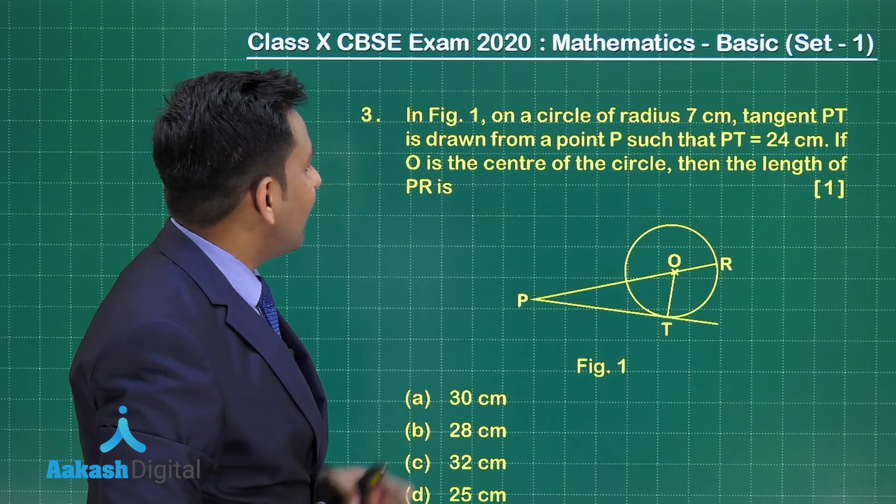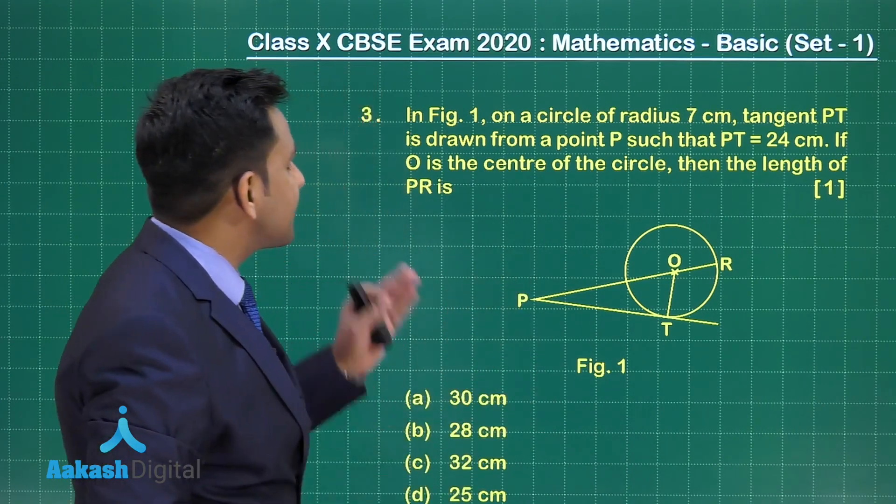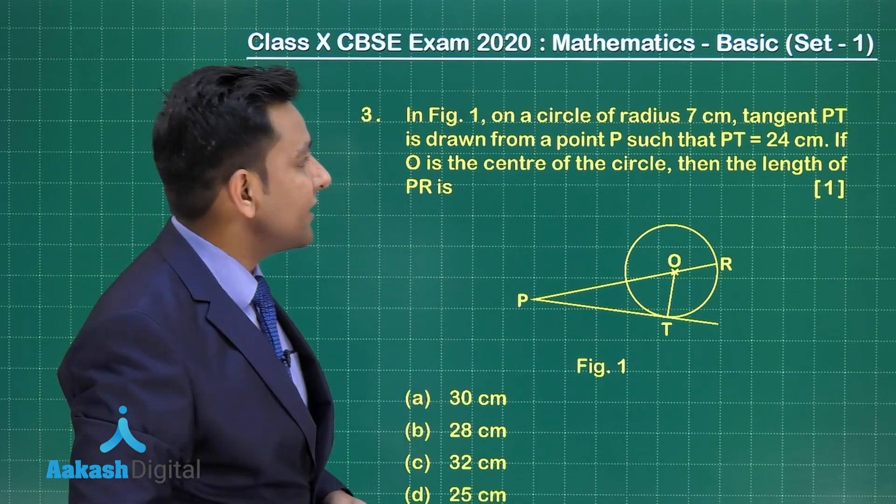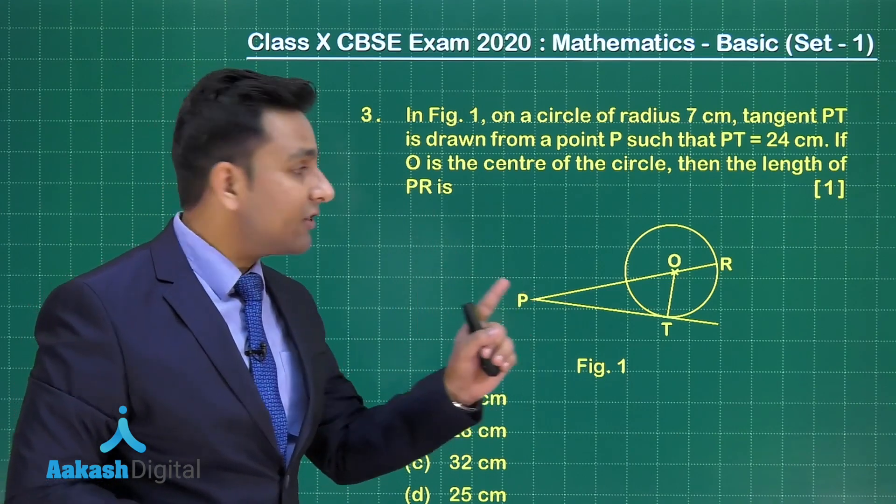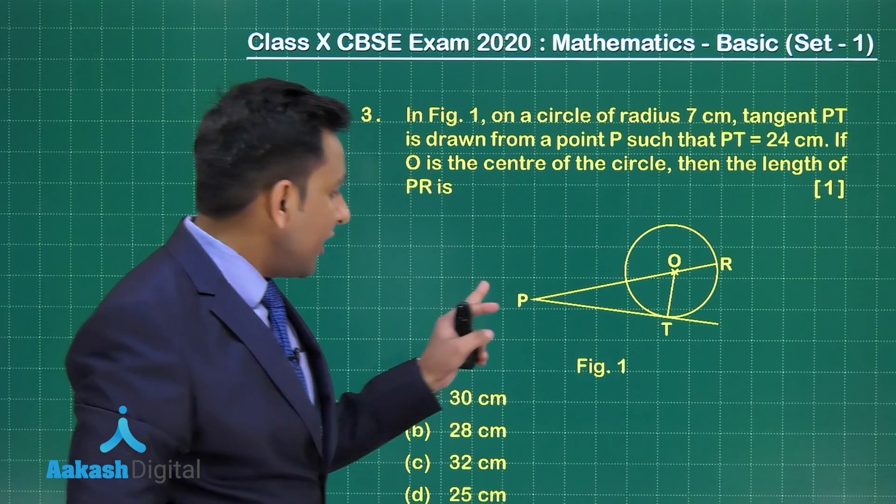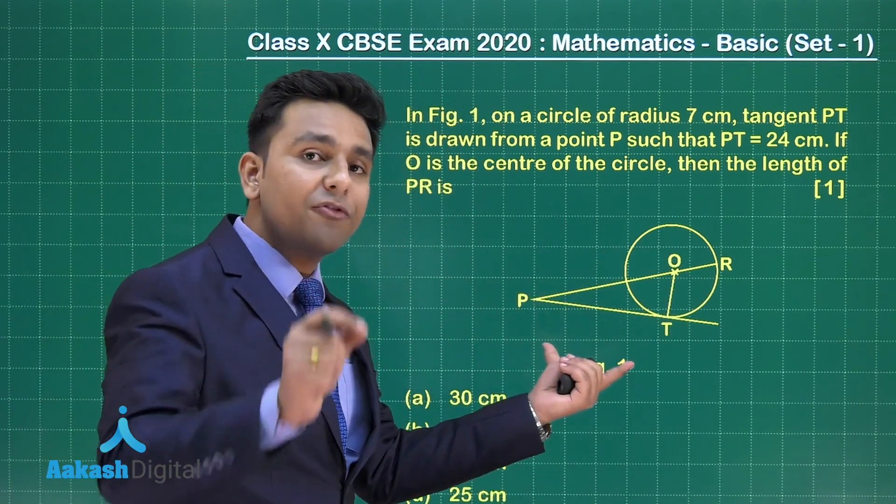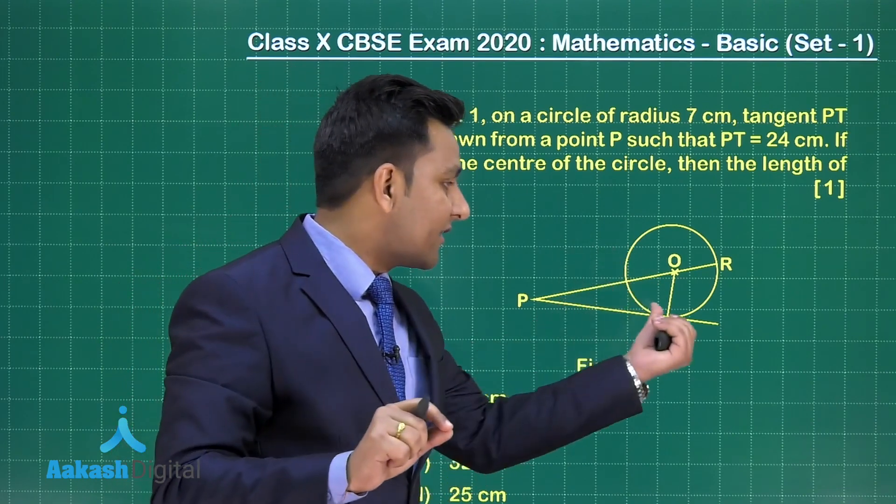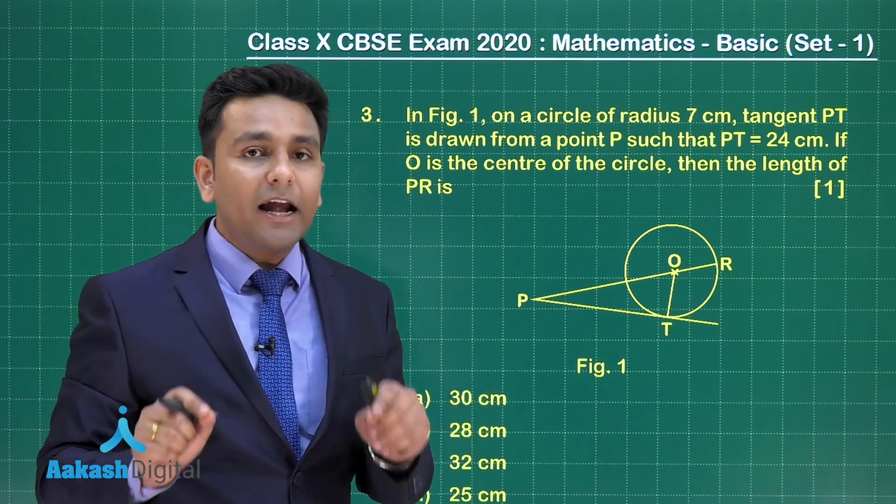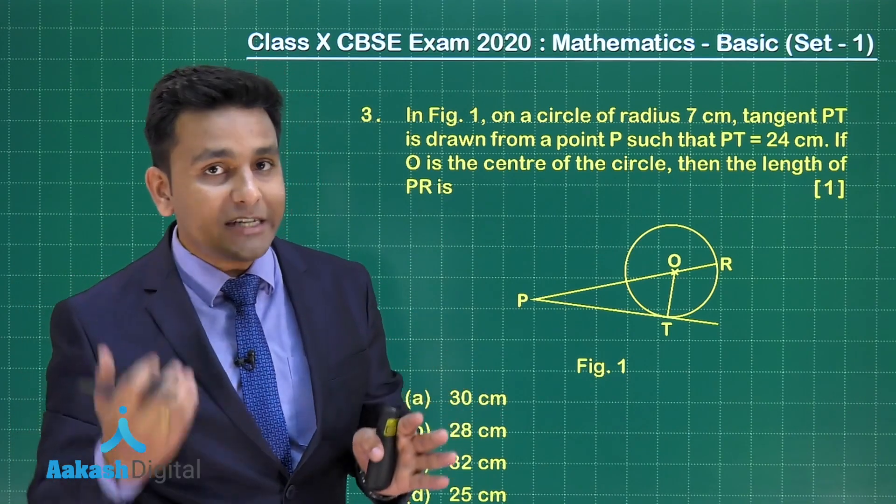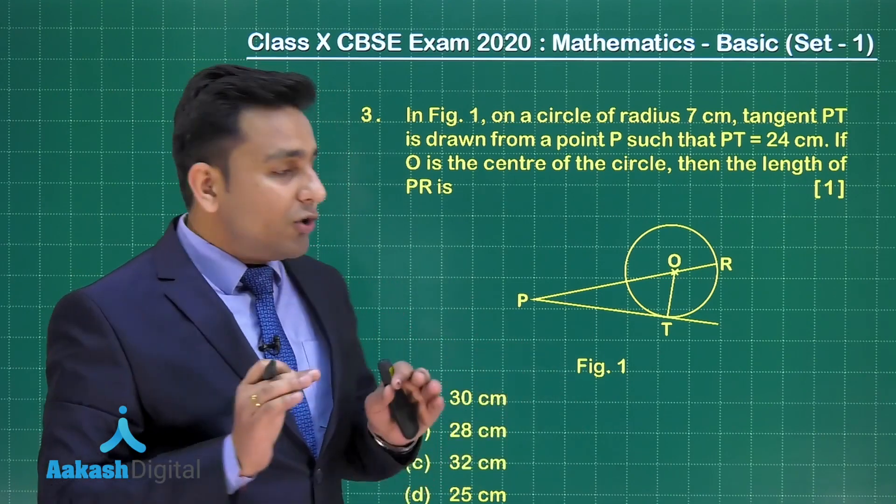This question states, in figure number 1, on a circle of radius 7 centimeter, tangent PT is drawn from a point P such that PT equals 24 centimeter. If O is the center of the circle, then the length of PR is. So here we have to find the length of line segment PR. PT is a tangent drawn from an external point to this circle at point T. This question is from chapter Circle and based on a theorem which states: the tangent is always perpendicular to the radius at the point of contact.